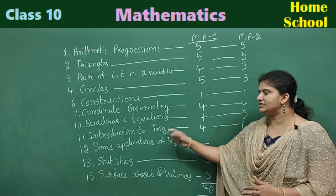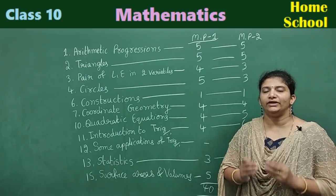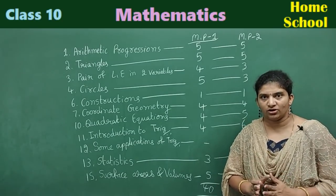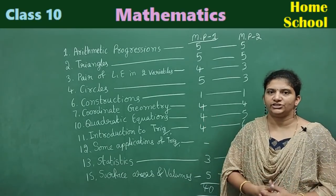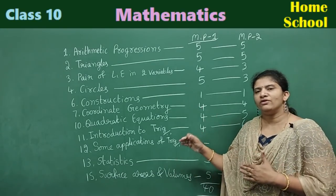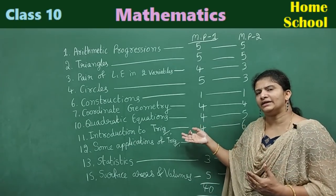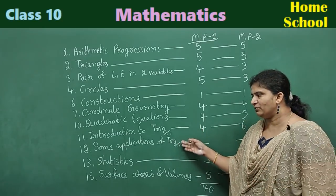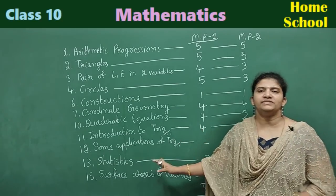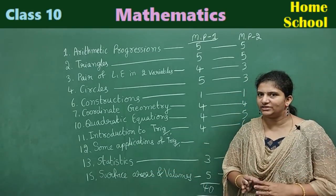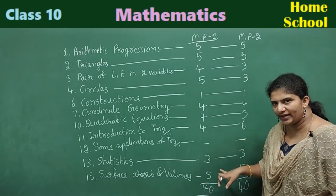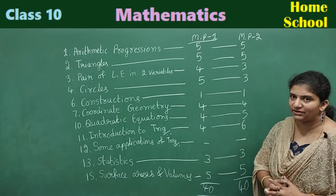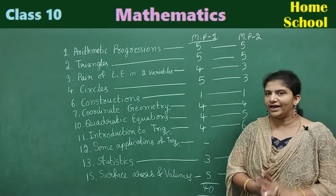Don't conclude that we don't get any question from Some Applications of Trigonometry — that conclusion is wrong. We may expect one question from this chapter. Instead of giving verbal statement-type questions, they might give a direct question that feels like Introduction to Trigonometry. From Statistics, compulsory — we can expect three questions; model paper one three, model paper two also three. Last chapter, Surface Areas and Volumes — compulsory, we can expect five questions.